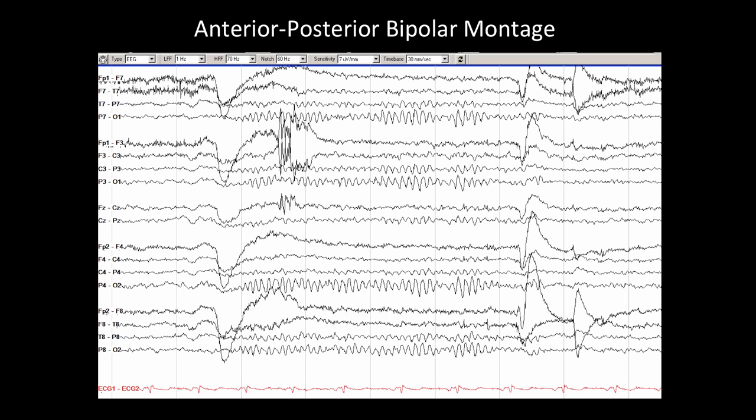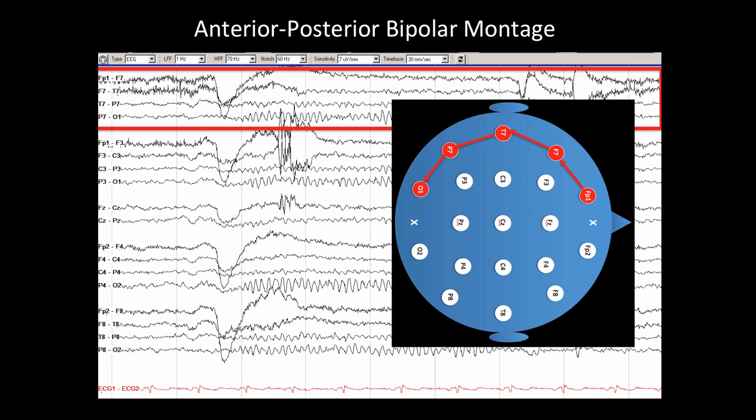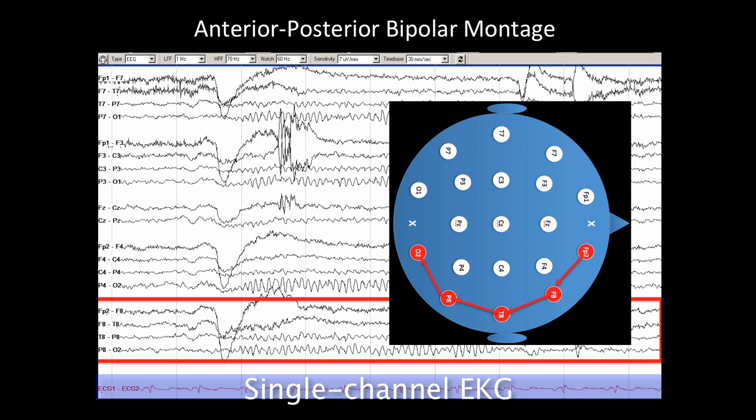Several chains can be placed together in a single display, such as this example of an anterior-posterior bipolar montage. This anterior-posterior bipolar montage is laid out as if we are looking at the top of the head of the patient and they are facing to the right. Therefore we first see the left temporal chain, then the left parasagittal chain, then the midline, then the right parasagittal chain, and then the right temporal chain. At the bottom we see a single EKG channel as well.